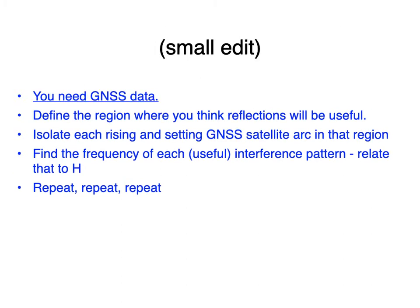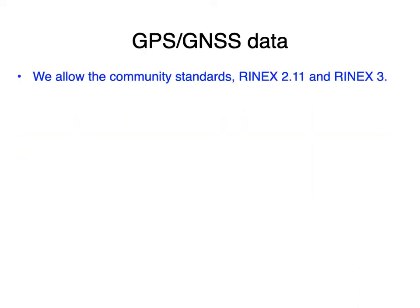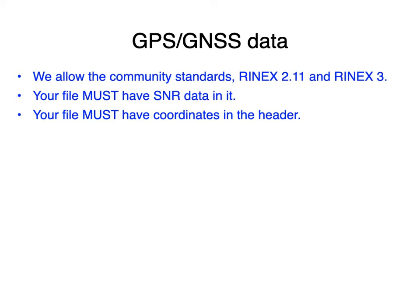What I left out of that theoretical discussion of reflections is data. Briefly, what you need: I only allow RINEX 2.11 and RINEX 3 — those are the community standards. You have to have SNR data in your files, and you have to have receiver coordinates in the header, because I need those data to compute elevation angle. Hopefully the code will tell you politely if you've tried to do the analysis without those.